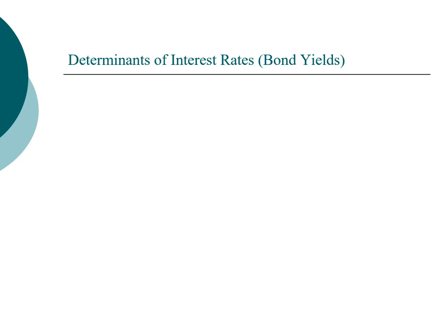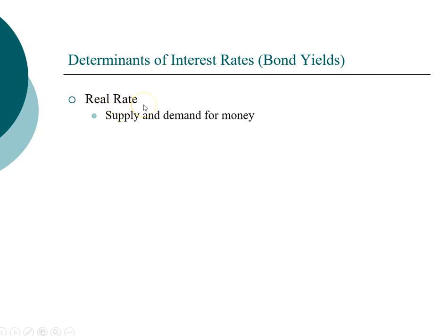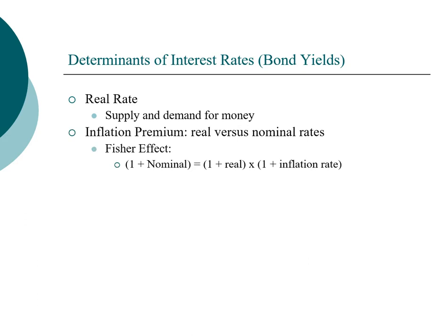All these characteristics together help determine the interest rate a company must pay to borrow money. The first factor is the real rate, which depends on the supply and demand for money. The real rate is very hard to find; the closest example is TIPS, because it is guaranteed by the U.S. government — nearly default-risk-free and protected against inflation — so the yield to maturity on TIPS is typically very low. For all other investments not protected against inflation, we also add an inflation premium. The Fisher effect describes the relationship between the nominal rate, the real interest rate, and the inflation rate.